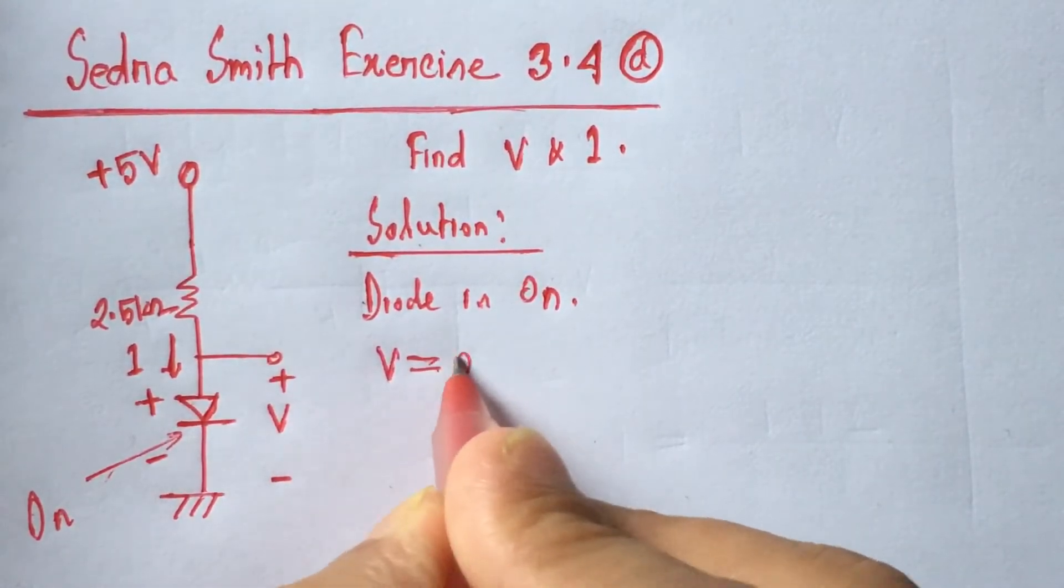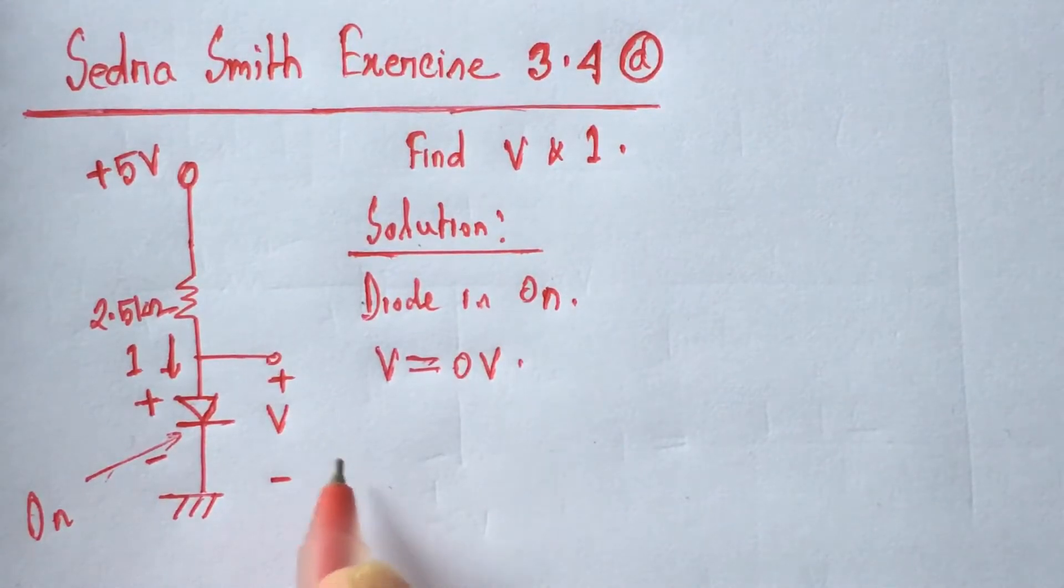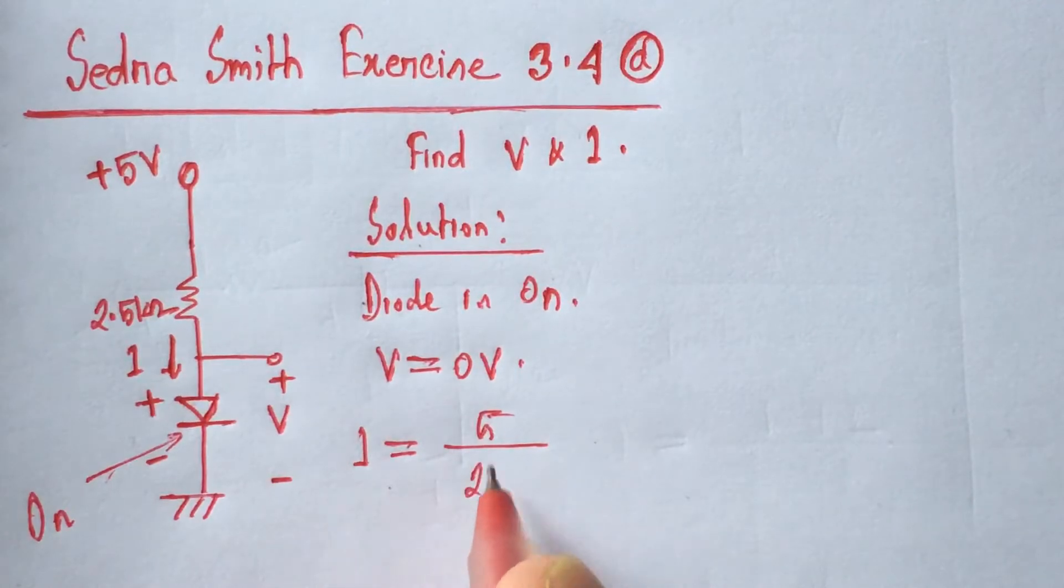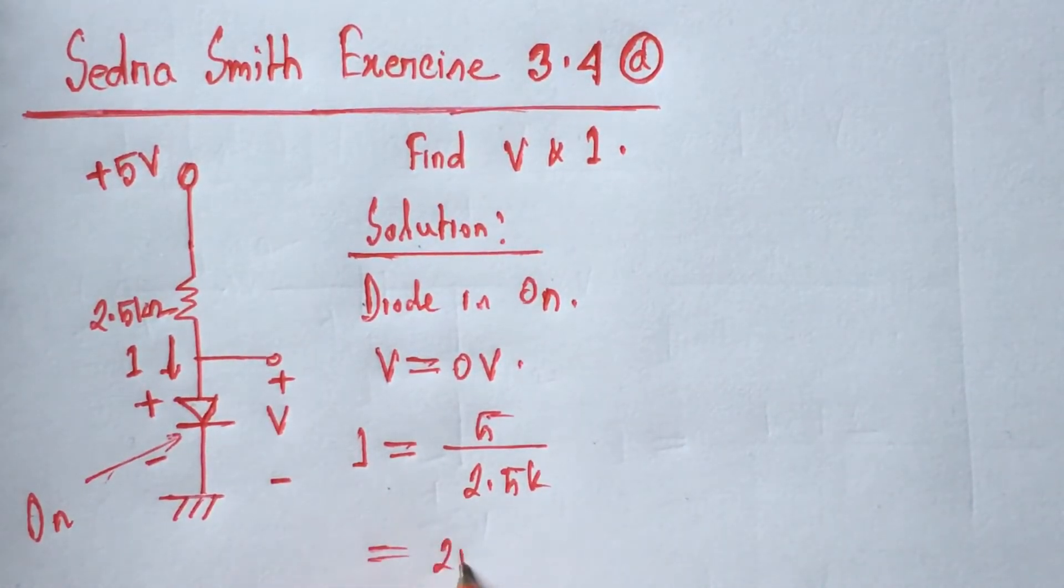the voltage V is 0 volts and current I will be calculated from 5 divided by 2.5 kilo-ohms, which equals 2 milliamperes.